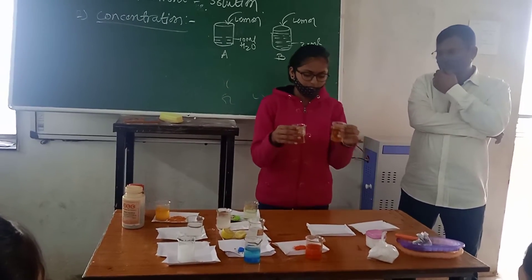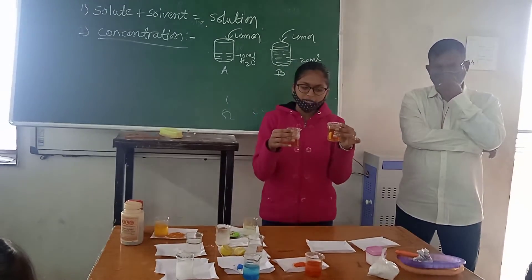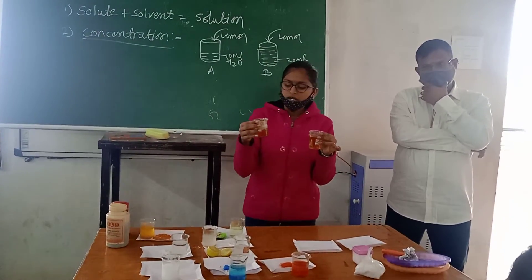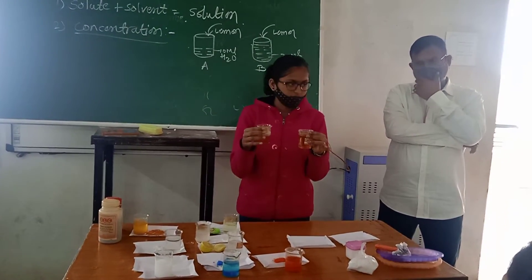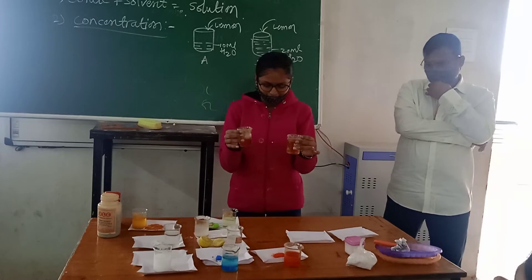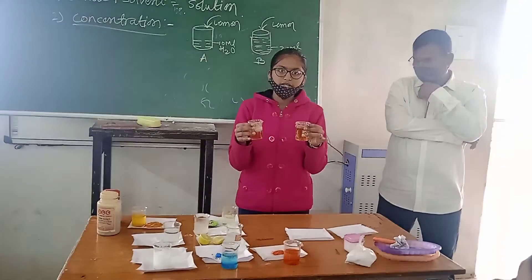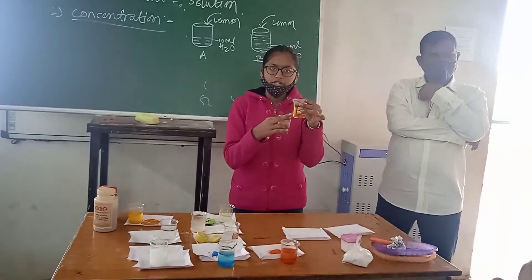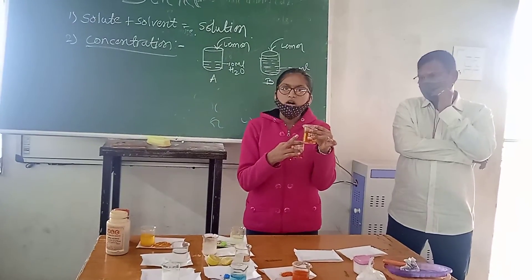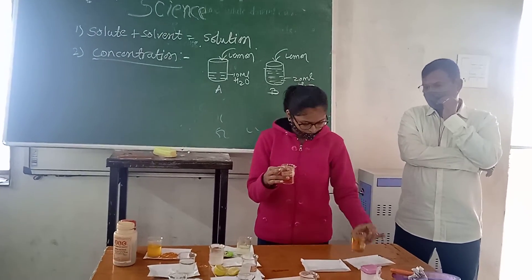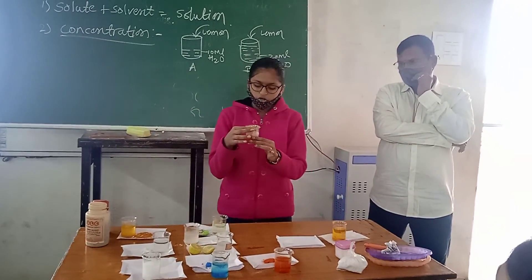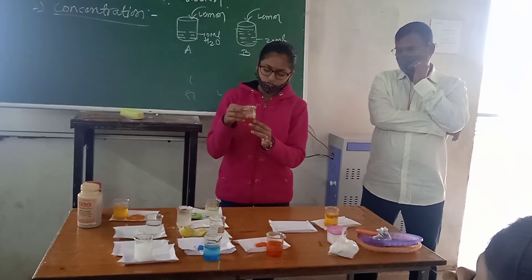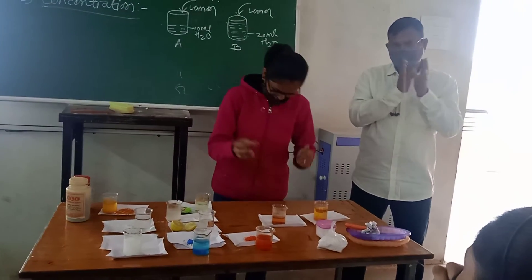Here we take two beakers — one beaker has 100 ml water and another beaker has 100 ml solution. In the second beaker, 50 ml solution is used. Potassium dichromate is added into the solution. With 100 ml water it gives a fine yellow color, while with 100 ml concentrated solution it gives a dark color of dichromate.